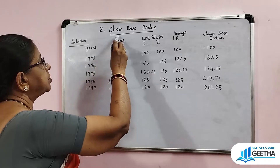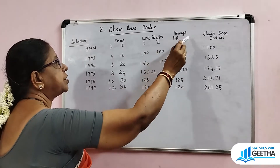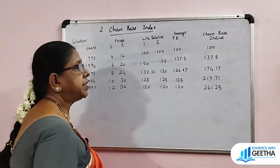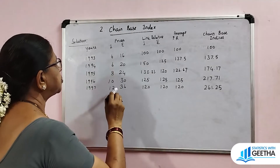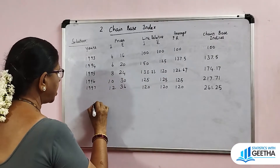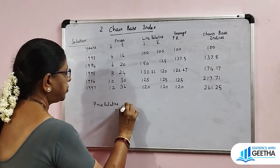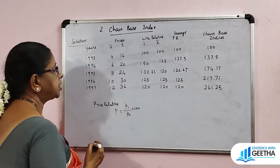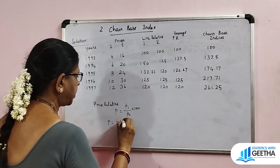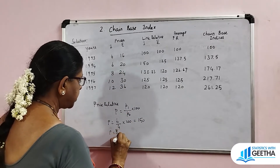For the second exercise with two commodities, we compute link relatives for commodity one and commodity two separately using P1 by P0 into 100. For commodity one: 6 by 4 into 100 gives 150; 8 by 6 into 100 gives 133.33; 10 by 8 into 100 gives 125; 12 by 10 into 100 gives 120. For commodity two: 20 by 16 into 100 gives 125; 24 by 20 into 100 gives 120; 30 by 24 into 100 gives 125; 36 by 30 into 100 gives 120.